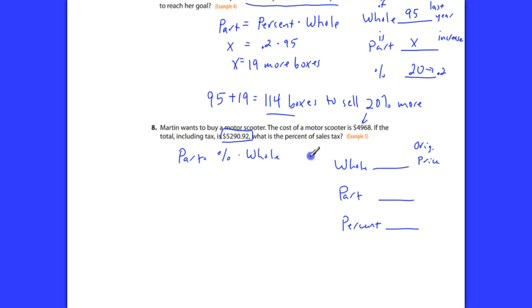Martin wants to buy a motor scooter. The cost of the motor scooter is $4,968 total, including the tax. The whole is the original price, which is $4,968. That's the original price. The part is the tax on the original price. Because based on this, they're going to have to pay a tax. So, the tax, we need to figure that out. Now, we can figure that out. Watch this. We have the original price, and we have the price after tax.